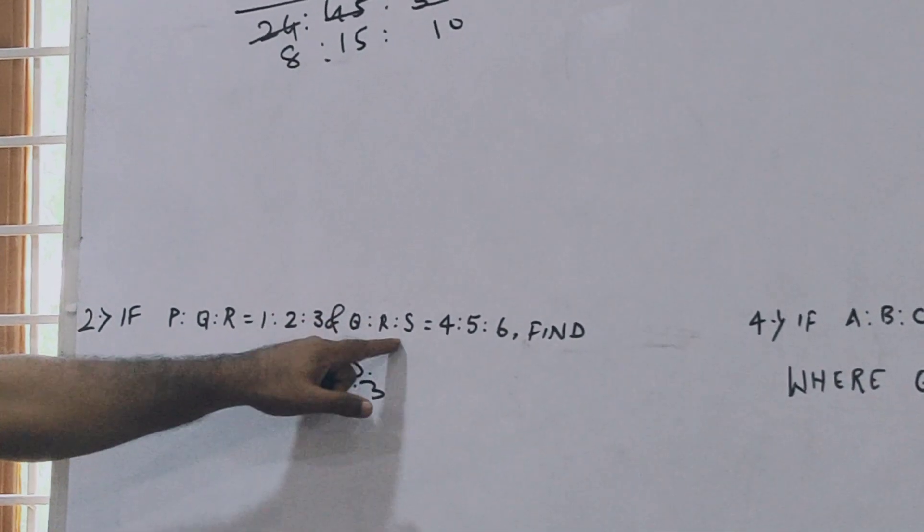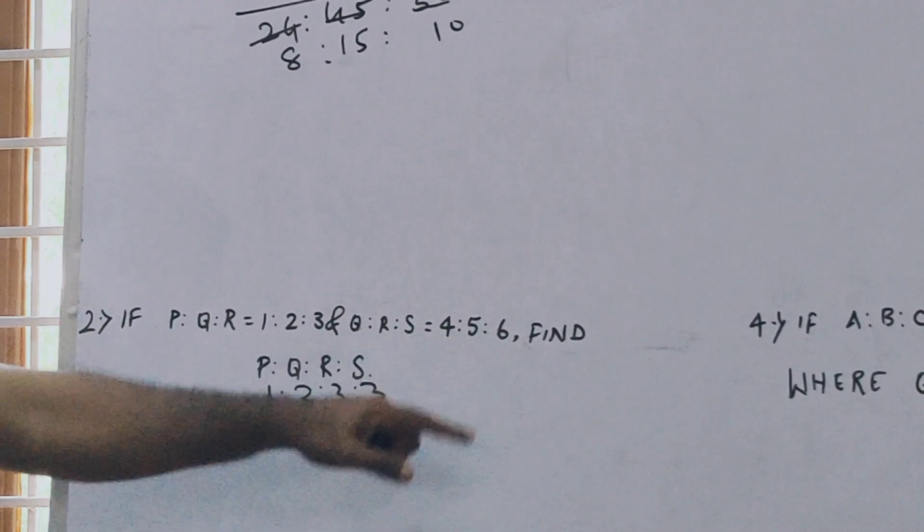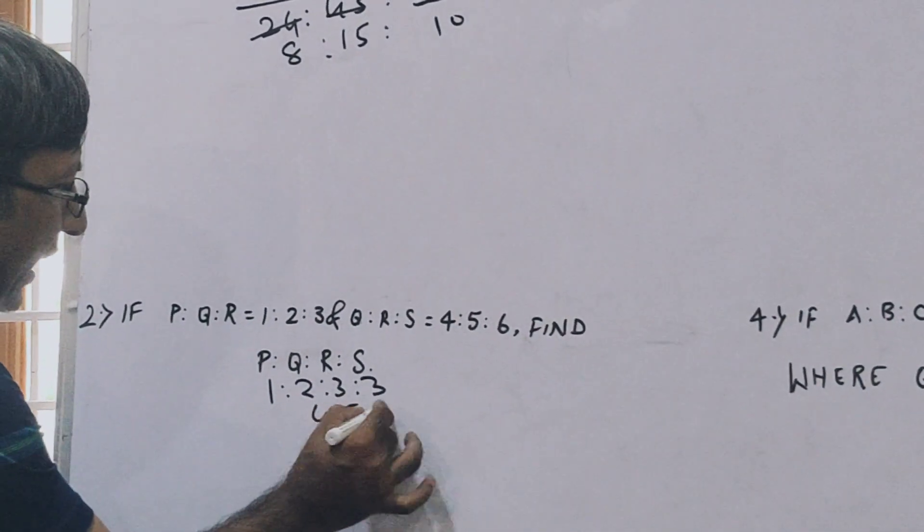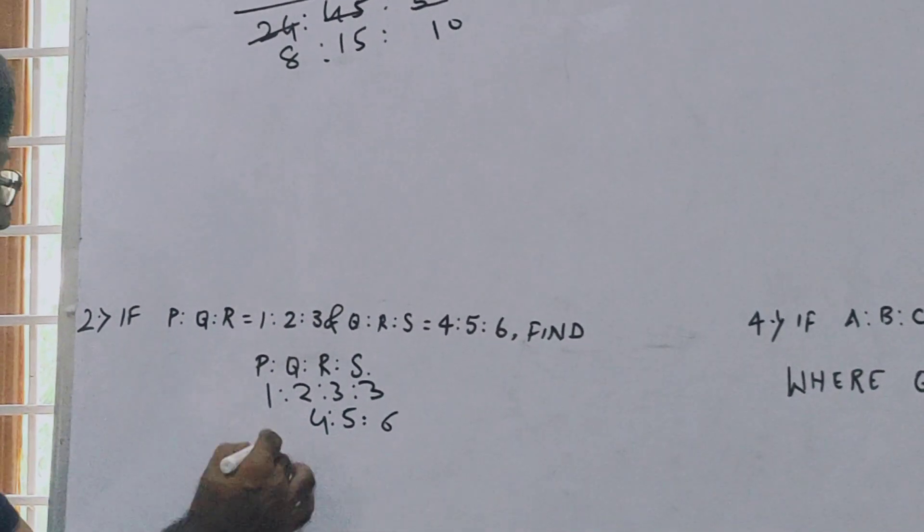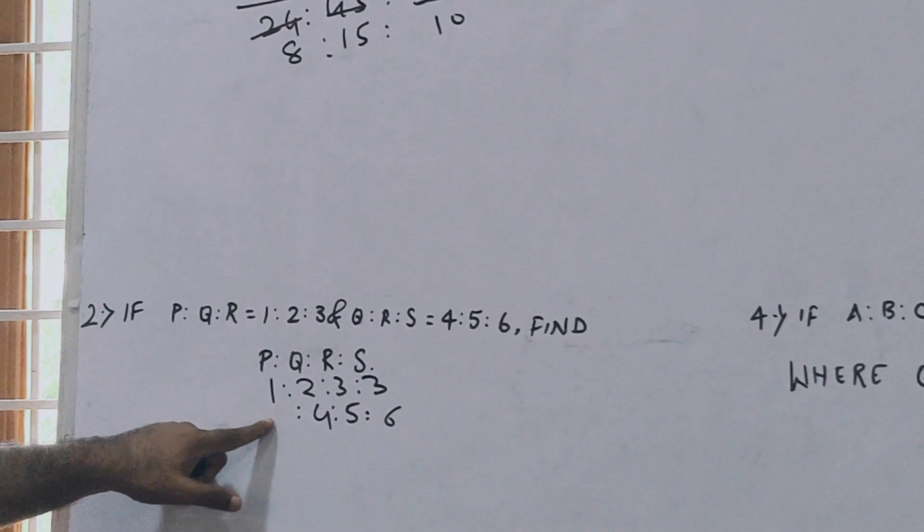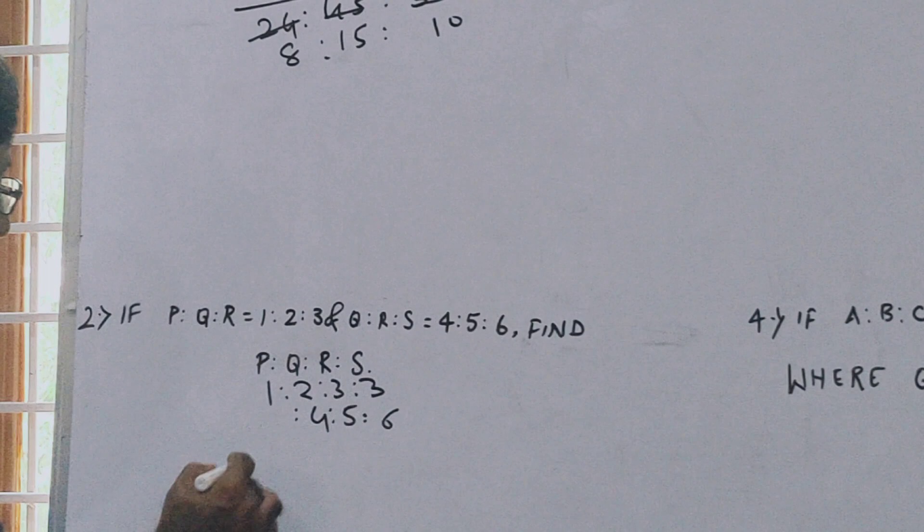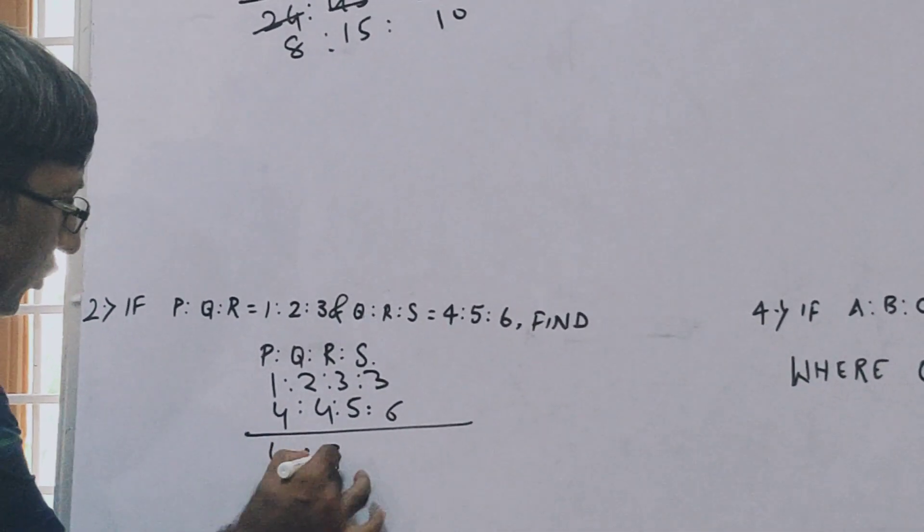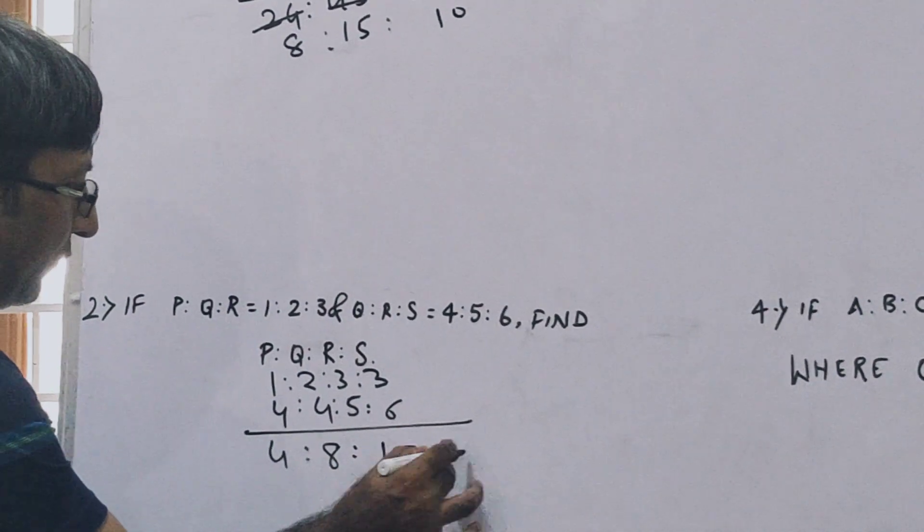Now same process, Q, R, S is 4, 5, 6. So write here 4, 5, and 6. This is vacant and it is near to 4, so write here 4. Now process it: 4 times 1 is 4, 4 times 2 is 8, 5 times 3 is 15, and this is 18.